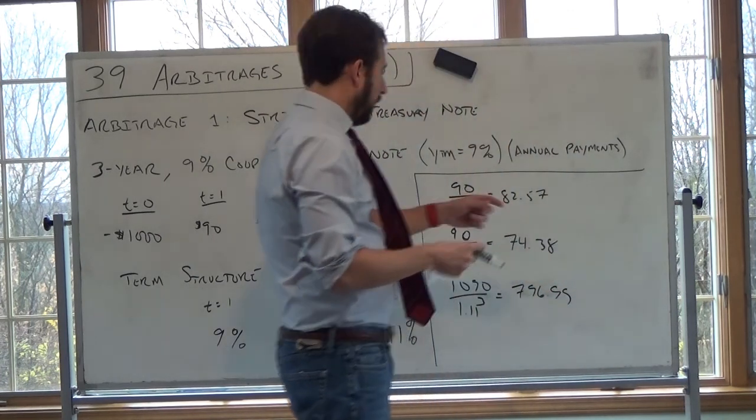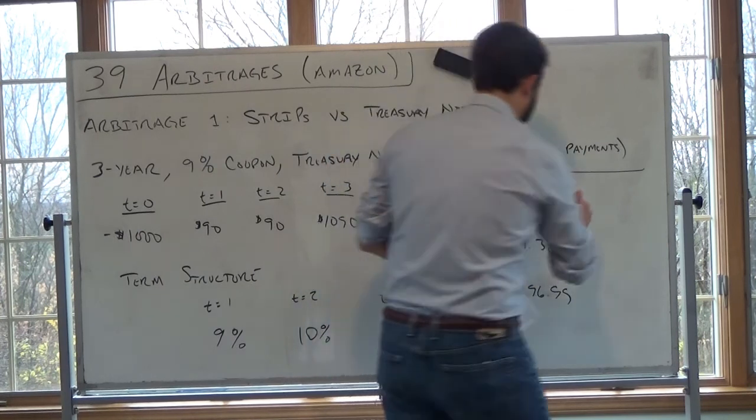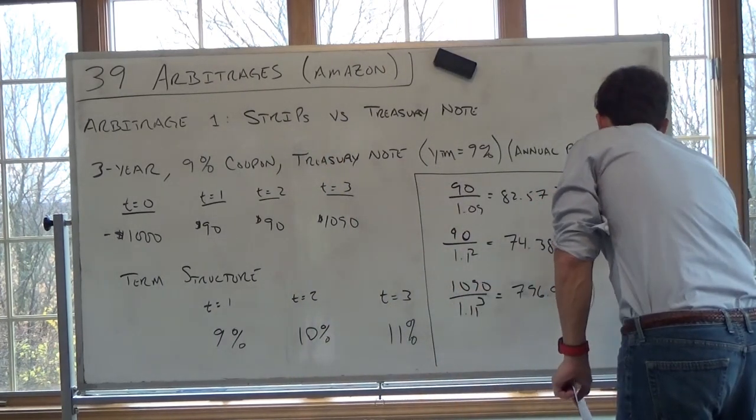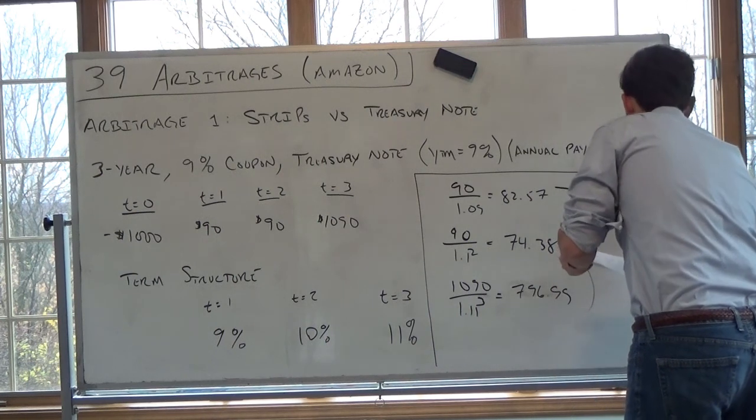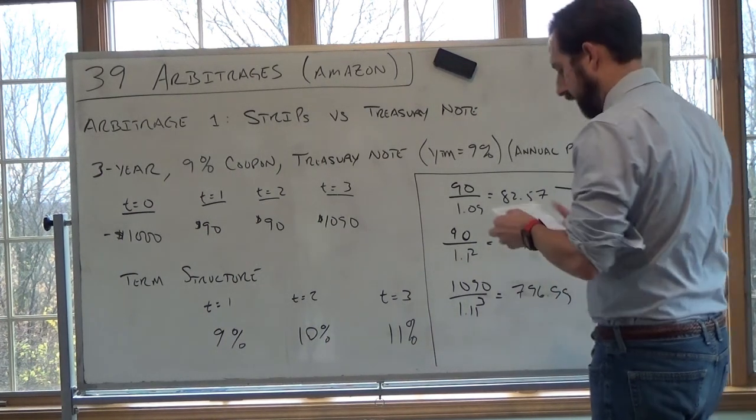So to buy all of these today, the total is going to be $953.94. So if I want to buy all of these, this is going to be $953.94.